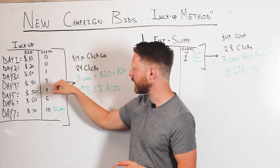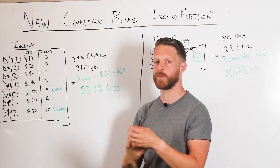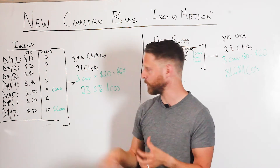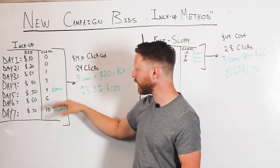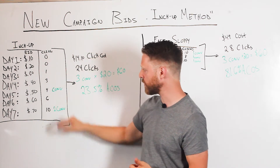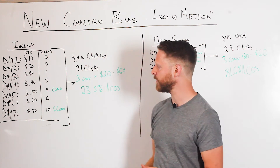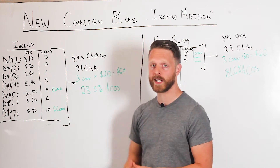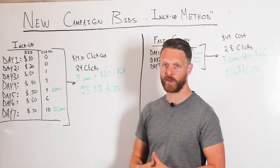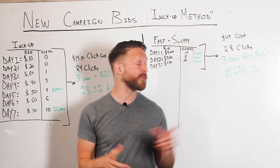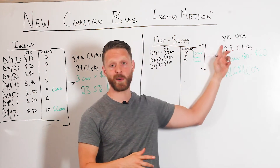What you start to see is zero clicks, zero clicks, then a little more — impressions start coming in, you start getting more clicks: one click, three clicks, four clicks, six, ten. And at the end of about a week, I end up with maybe three conversions.